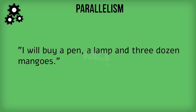I will buy a pen, a lamp and three dozen mangoes. We can bullet point the items in the given sentence as: a pen, a lamp, three dozen mangoes. Here, all the three items act as objects of the verb 'buy.' Hence, all the three items are parallel with each other.